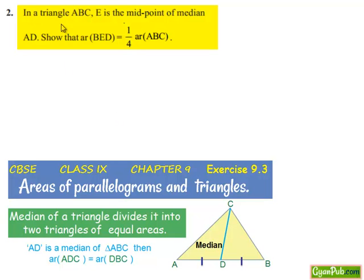Moving on to the second question. In triangle ABC, E is the midpoint of median AD. Show that area of BED is equal to one-fourth of area of ABC.